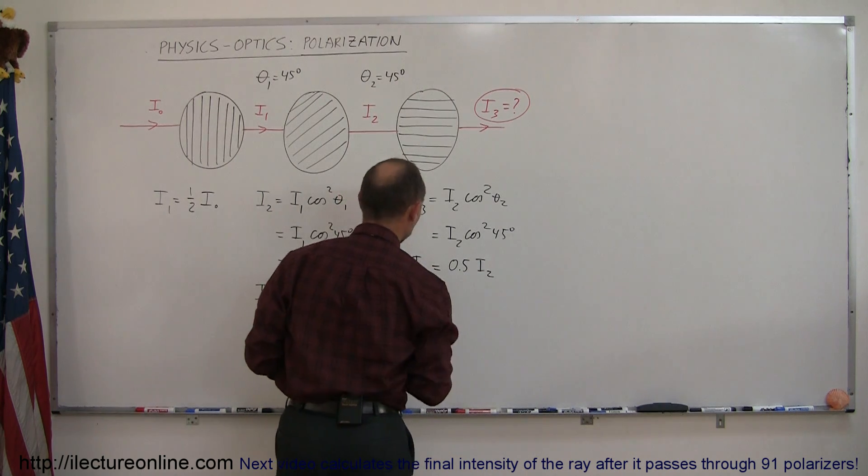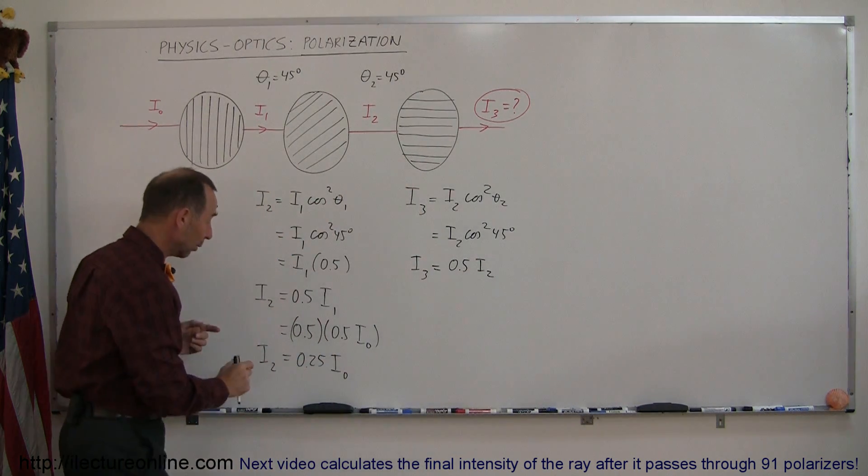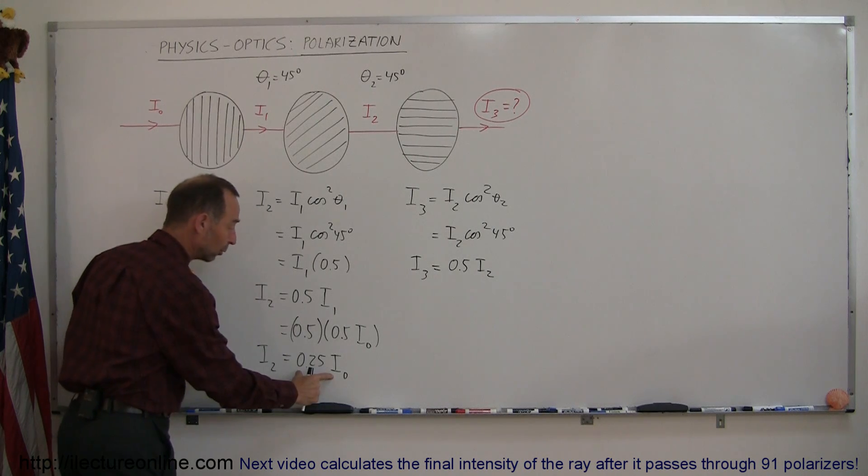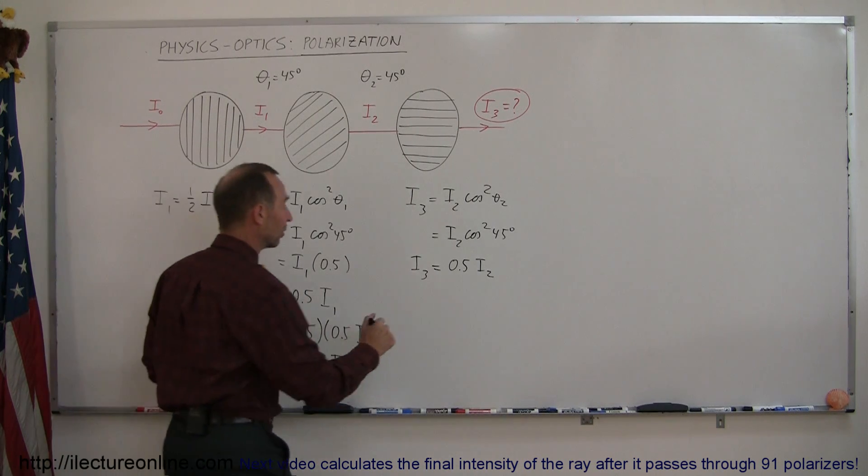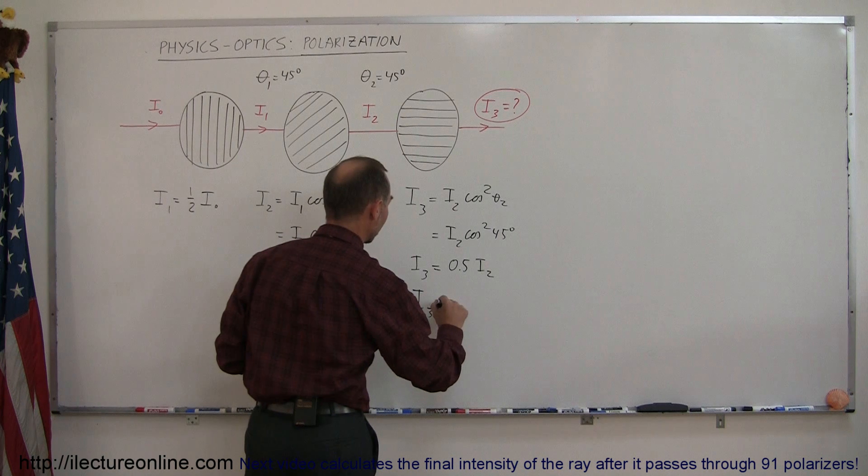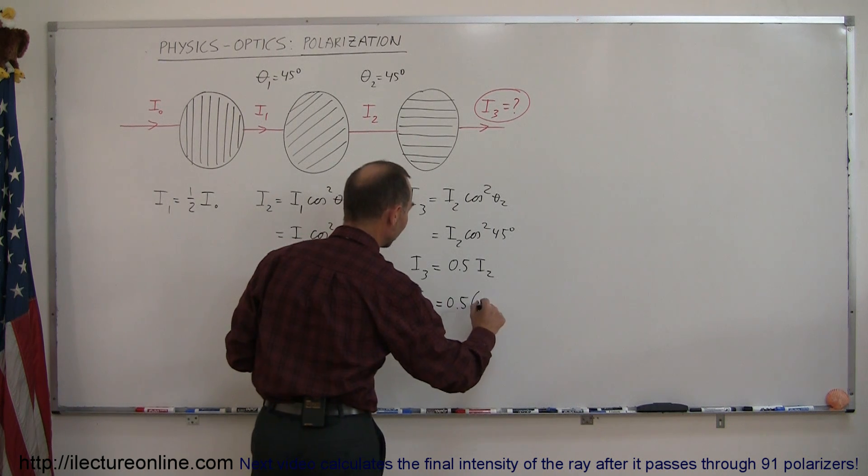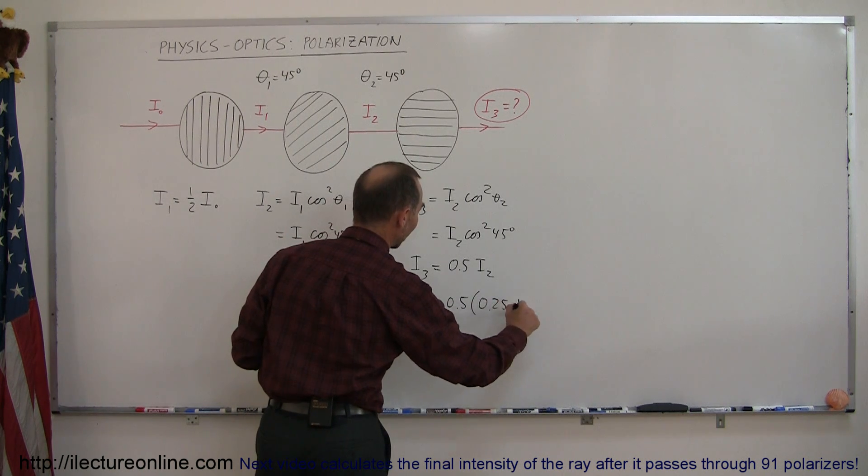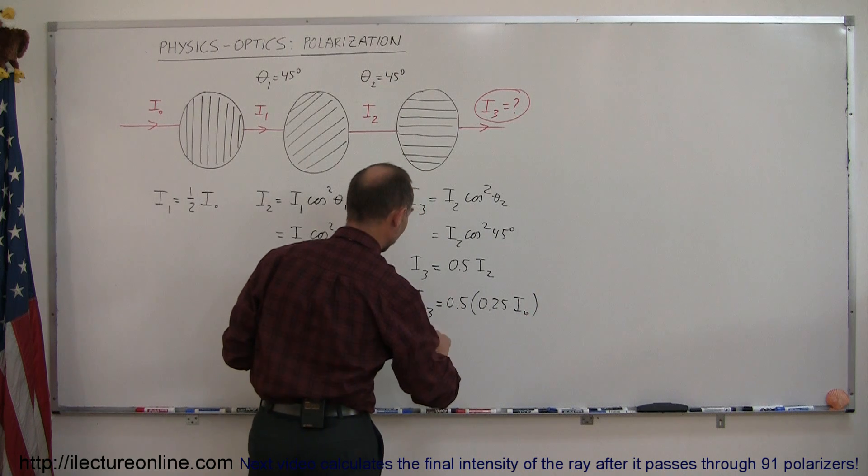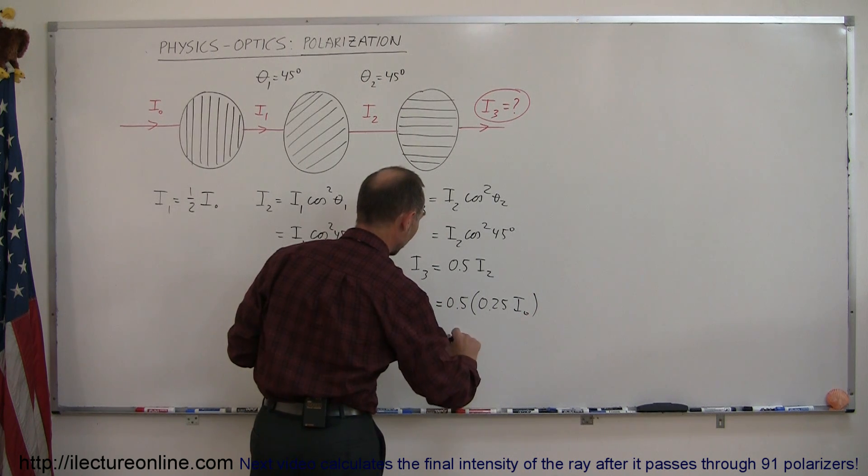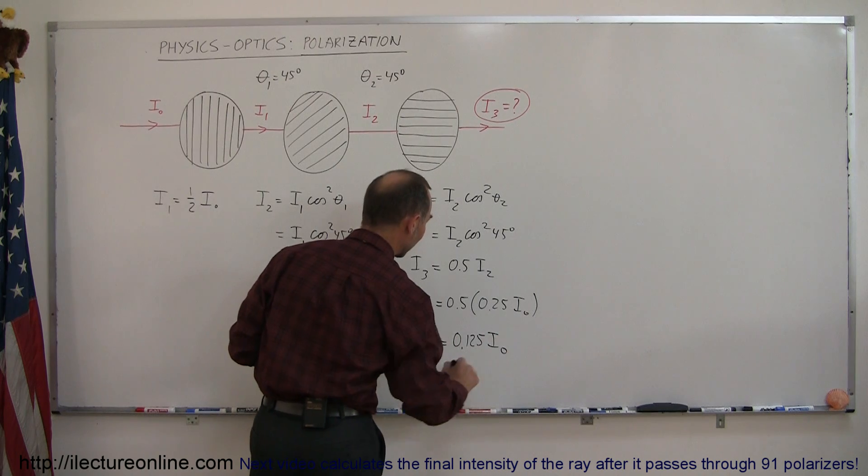And there it gives us—that's what I₃ is equal to. And then when you plug in what I₂ is equal to, which is equal to a quarter of I₀, you see that I₃ is equal to 0.5 times 0.25 times I₀, which means that I₃ is equal to 0.125 times I₀.